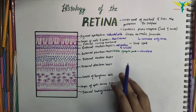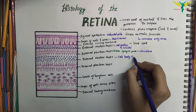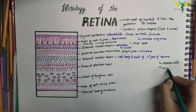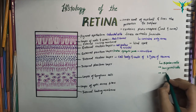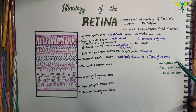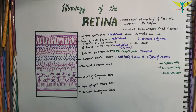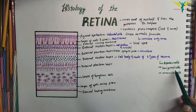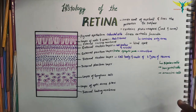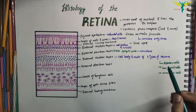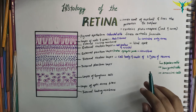The internal nuclear layer contains the nuclei and cell bodies of three types of neurons: bipolar cells, horizontal cells, and amacrine cells. The bipolar cells give off dendrites that enter the external plexiform layer to synapse with the axons of the rods and cones; bipolar cells are arranged perpendicular to the retinal layers. Horizontal cells give off processes that run parallel to the retinal surface, entering the outer plexiform layer where they synapse with the rods, cones, and dendrites of the bipolar cells.